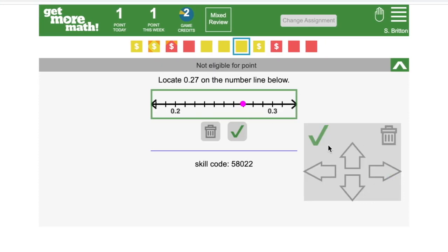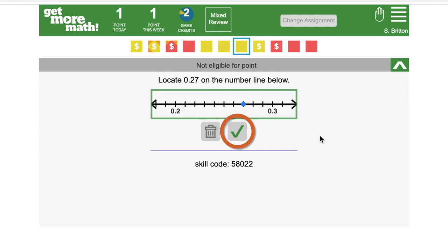Also, keep in mind that clicking on the green check in the adjustment box doesn't submit your problem. When you're ready to submit, click on the green check button below the number line.